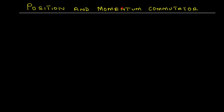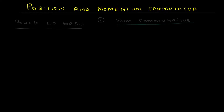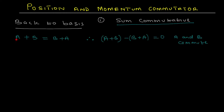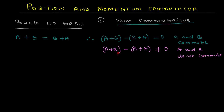Position and momentum operator. Sum commutative: if a plus b equals b plus a, therefore a plus b minus b plus a must equal zero. If that's the case, a and b commute. But if a plus b minus b plus a is not equal to zero, a and b do not commute.